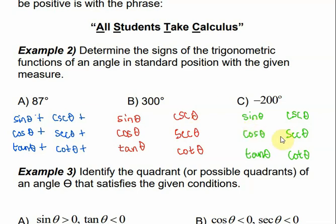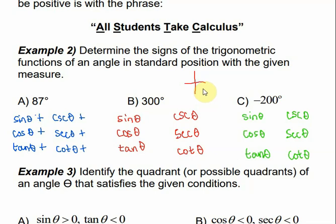For 300 degrees — starting at 0, halfway around is 180, then 270, and all the way is 360 — so 300 degrees is here in the fourth quadrant. Using 'all students take calculus,' that means cosine and its reciprocal are positive, and then everything else is negative.